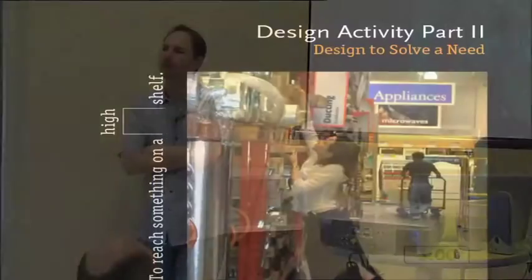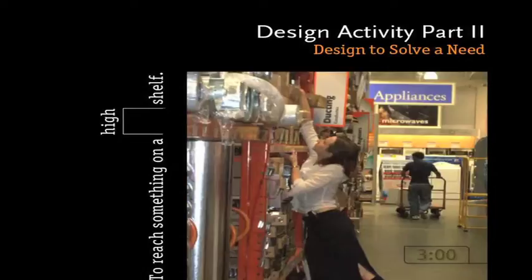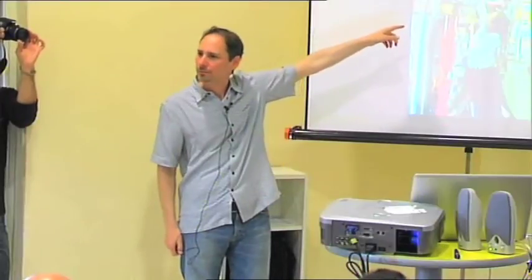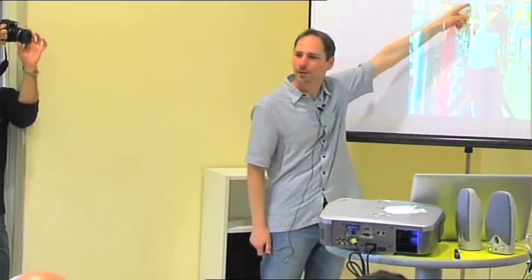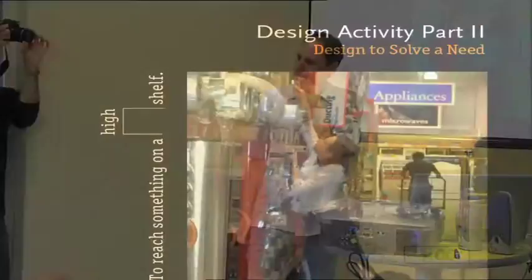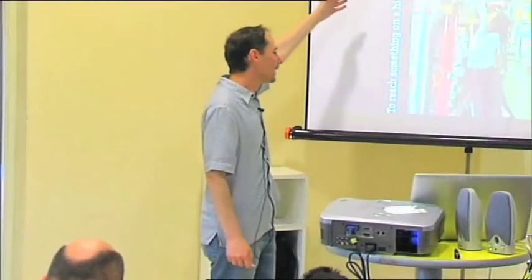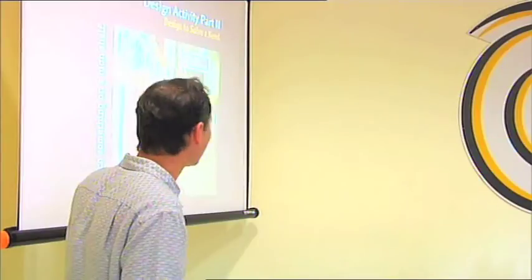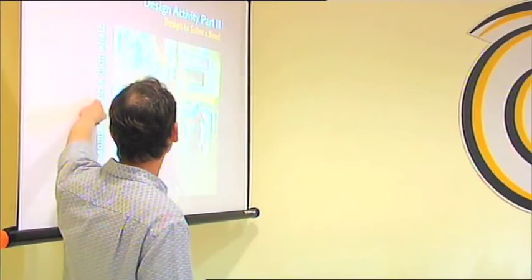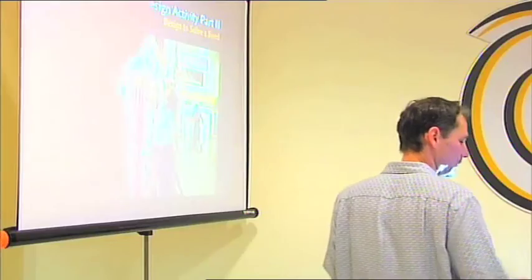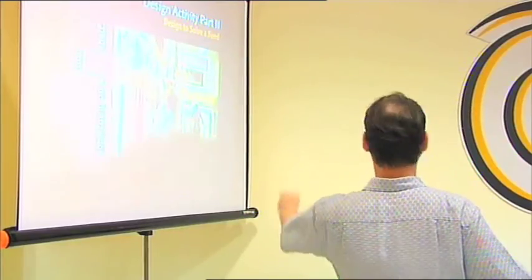What does the lady need to reach the shelf? Or does she need the ducting? Or does she need the air that flows through the ducting? Or does she need to be comfortable? Which is it? Design activity part two — right now I want you guys to design a way to reach something on a high shelf. You have three minutes to do so, starting now.